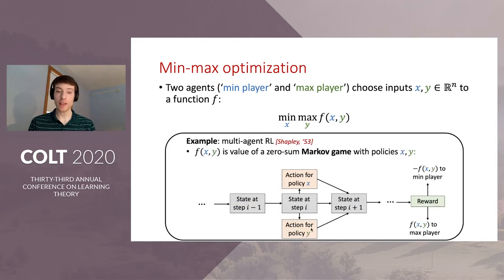Another example occurs in multi-agent RL, where f(x,y) is the value of a zero-sum Markov game, where the policies of the min and max player are parametrized by their vectors x and y.